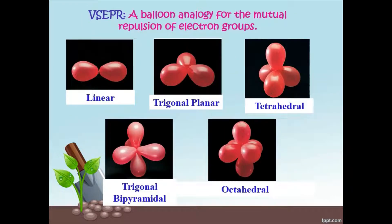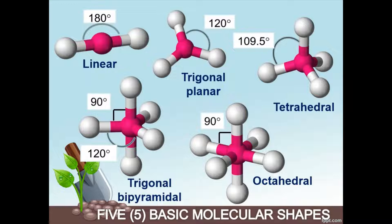These are the five basic shapes in your book. On page 136, you can see that linear, trigonal planar, tetrahedral, trigonal bipyramidal, and octahedral each have their own bond angle.